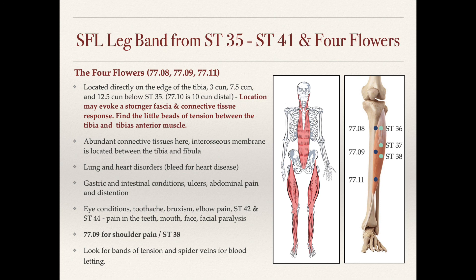One thing about these four flowers: when we move the points to the edge of the tibia, there's abundant connective tissue in this area, and there's an interosseous membrane that runs between the tibia and the fibula. So as we move these points to the edge of the tibia, it's likely that we're affecting the connective tissues more so than if we needle into points like stomach 36 and stomach 37, which are in the tibialis anterior muscle. Some research has shown that nerves in the muscles and the way that points in the connective tissues respond neurologically are very similar. There are studies that link connective tissue points and muscular points together because the results are so similar in the way that they work.